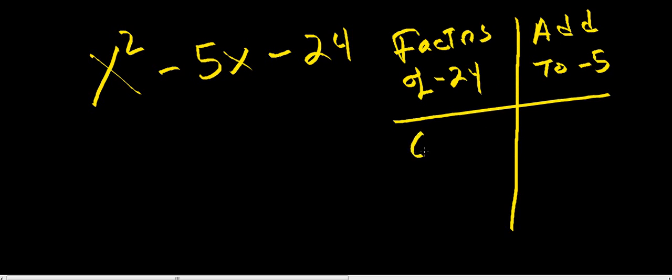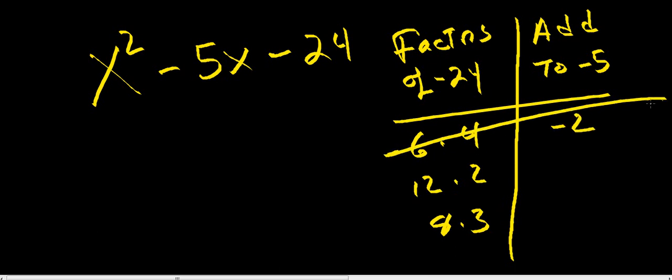So 6 times 4, 12 times 2, 8 times 3. If you got negative 6 plus positive 4, that's going to be negative 2, so that's not it. 12 plus negative 2, that's 10, that's not it. Let's look at our 8. You've got minus 8 plus 3, that's negative 5. So that's what we're looking for.